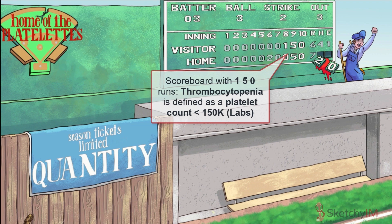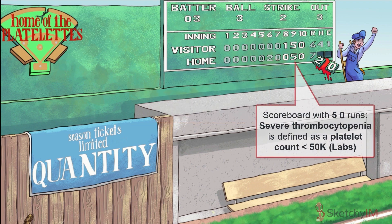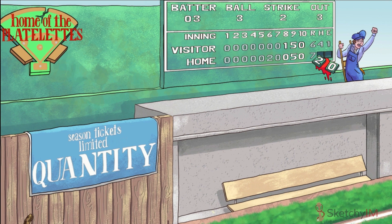The home team score spells out 50, to remind you that when the platelet count dips below 50,000, your patient technically has severe thrombocytopenia. When patients reach this level, we start worrying about uncontrollable bleeding in the setting of surgery or trauma. All of this discussion of mild, moderate, or severe thrombocytopenia is really just academic, though — just because your platelet count meets the criteria for thrombocytopenia doesn't mean your patient will actually have bleeding problems.